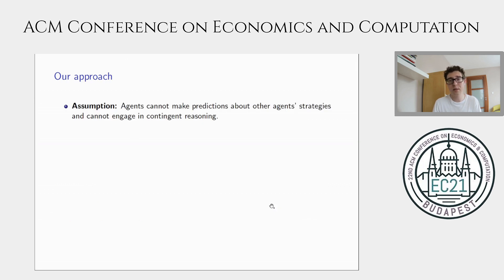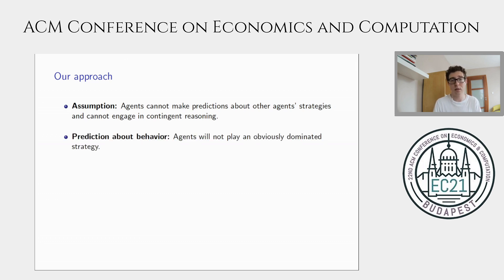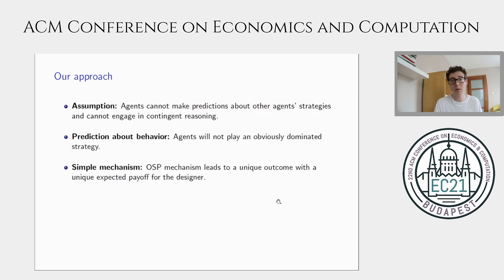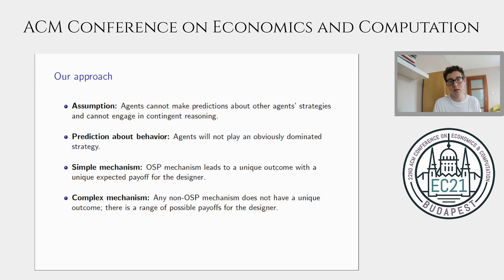The main message of the paper is that even though using a simple mechanism allows the designer to predict play, this may sometimes be insufficient to justify the use of simple mechanisms. We take seriously the behavioral assumption underlying OSP: agents cannot make predictions about other agents' strategies and cannot engage in contingent reasoning. From this, agents will not play an obviously dominated strategy and will play an obviously dominant strategy if they have one. In a simple OSP mechanism there is a unique predicted outcome; in a complex non-OSP mechanism there is a range of possible payoffs for the designer.